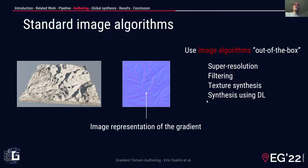DEMs are usually represented by images, which simplifies their manipulation. We can transpose this to the gradient using two channels of the image to represent the two components of the gradient. This has the advantage of being able to use standard image algorithms applied in the gradient domain. We successfully applied this to super-resolution, filtering, texture synthesis, and other machine learning methods.